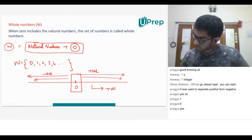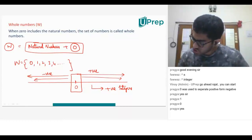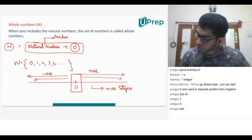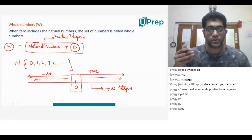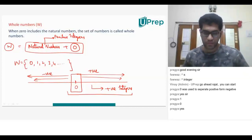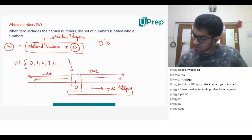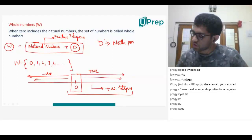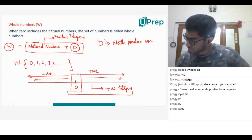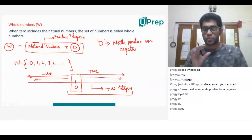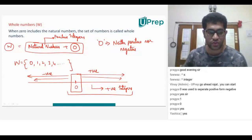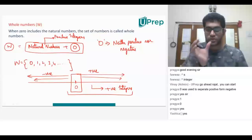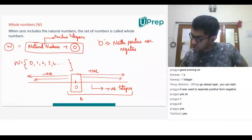So can I say that natural numbers are also called positive integers? They start with one. Now if I talk about whole numbers, that means I am including zero plus positive integers. But zero is very important to understand — zero is neither positive nor negative. When I include zero along with all the natural numbers 1, 2, 3, 4, 5, that set of zero plus positive integers is known as non-negative numbers.